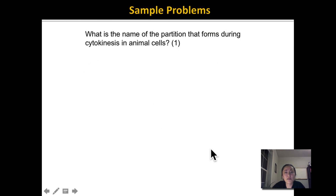What is the name of the partition that forms during cytokinesis in animal cells? That would be the cleavage furrow.